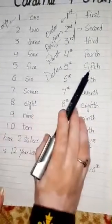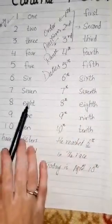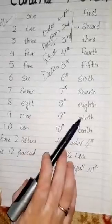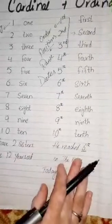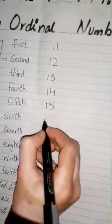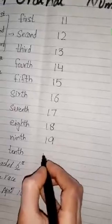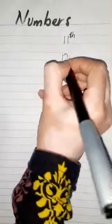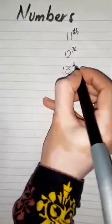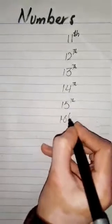Now I write: eleven, twelve, thirteen, fourteen, fifteen, sixteen, seventeen, eighteen, nineteen, and twenty. Now I write ordinal numbers: eleventh, twelfth, thirteenth, fourteenth, fifteenth, sixteenth, seventeenth, eighteenth, nineteenth, and twentieth.